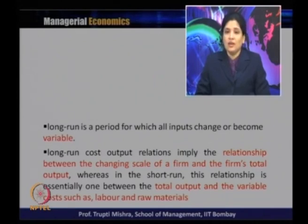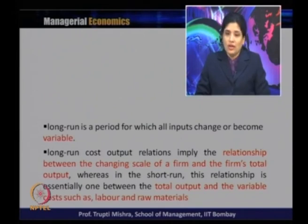Long run cost-output relation implies the relationship between the changing scale of firms and the firm's total output. In the long run, it is a scale relationship, whereas in the short run, the relationship is between total output and specifically the variable cost — which includes raw material and labor.